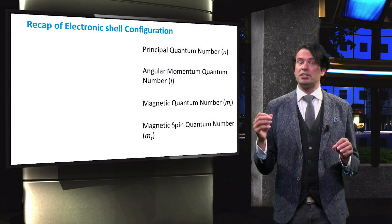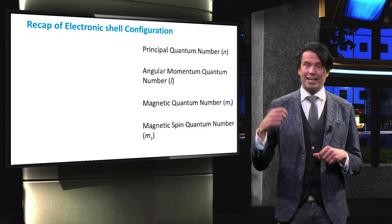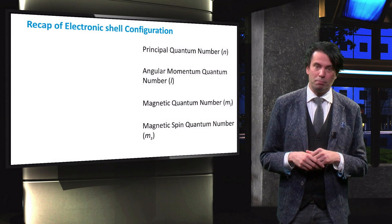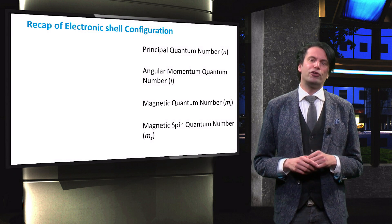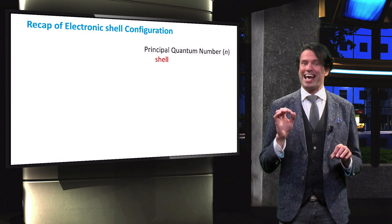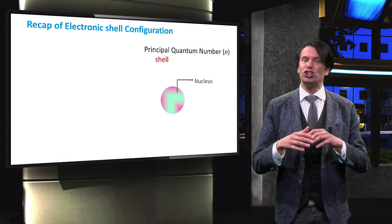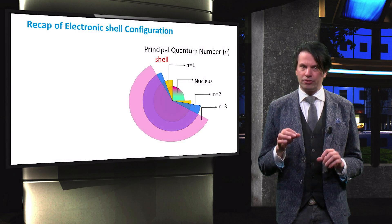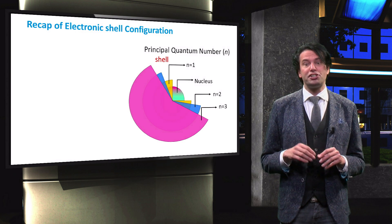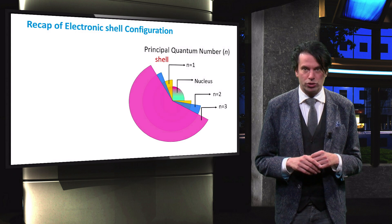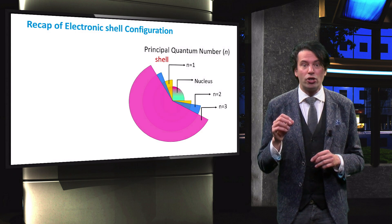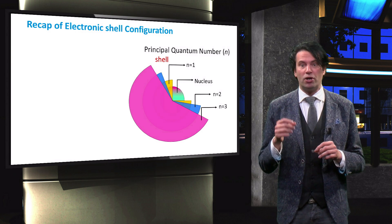These are the principal, angular momentum, magnetic and magnetic spin quantum numbers. First, the principal quantum number n describes an energy shell in which the electron exists. The energy shell has a number of sub-shells, which are described by the angular momentum quantum number l.